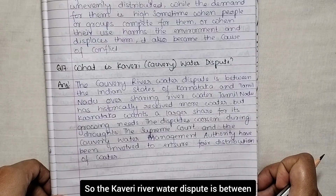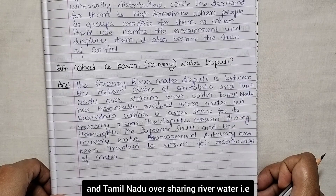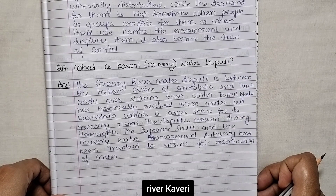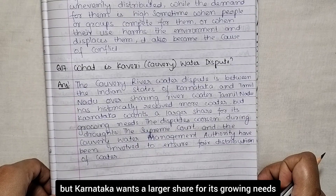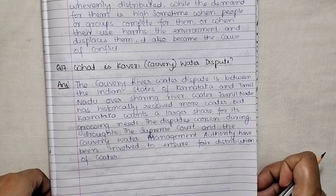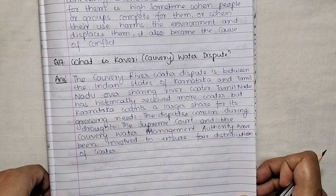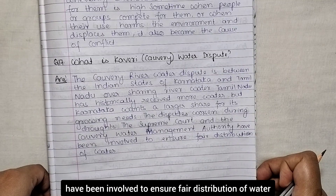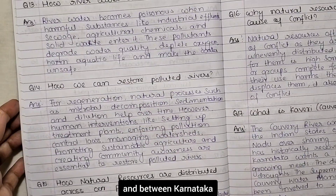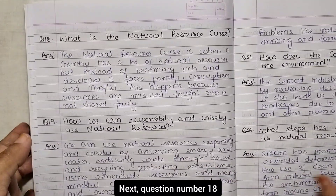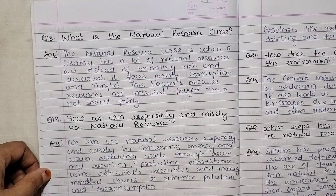Next: what is the Kaveri water dispute? The Kaveri river water dispute is between the Indian states of Karnataka and Tamil Nadu over sharing the waters of river Kaveri. Tamil Nadu has historically received more water, but Karnataka wants a larger share for its growing needs. The dispute worsened during droughts, and the Supreme Court and the Kaveri Water Management Authority have been involved to ensure fair distribution.